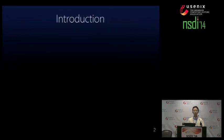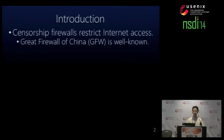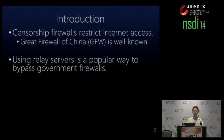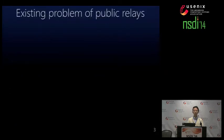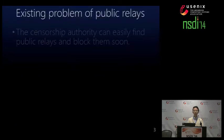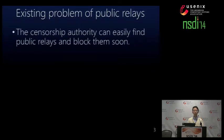This slide shows the interaction of VPN Gate. Censorship firewalls restrict internet access. For example, the Great Firewall of China is a well-known government firewall. Using relay servers is a popular way to bypass government firewalls. Public relays help people behind the firewalls to access the free internet. For example, public VPN services, open proxies, and Tor are publicly available. However, there is an existing problem with public relays: the censorship authority can easily find public relays and block them soon.